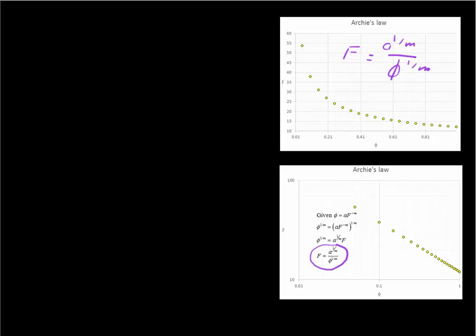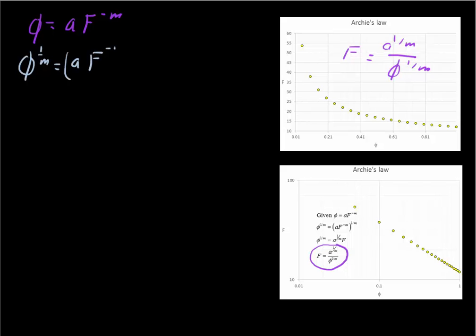How do we get that? We started off with phi equals a times F to the minus m. I said, okay, just raise both sides of that equation to the 1 over m power, which gives us phi to the 1 over m equals a times F to the minus m, all raised to the 1 over m. We have to remind ourselves of the basic rules: if we have something like a times b to the c power, this is the same as a to the c times b to the c.